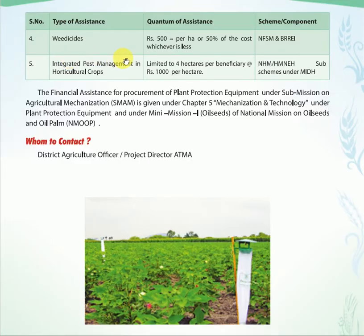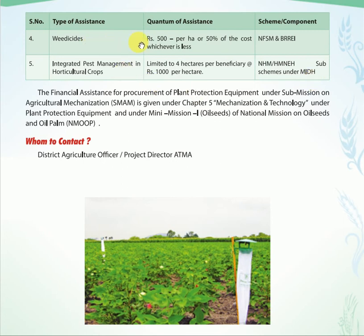For VD sites, ₹500 per hectare and 50 percent of the cost, whichever is less — note this under NFSM and RKVY. Integrated pest management in horticulture crops is limited to 4 hectares per beneficiary at ₹1,000 per hectare under NHM, HMNEH, and sub-schemes under MIDH. VD site is very important — there may be a question on it. Financial assistance for procurement of plant protection equipment is given under Sub-Mission on Agriculture Mechanization.